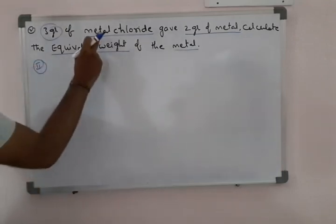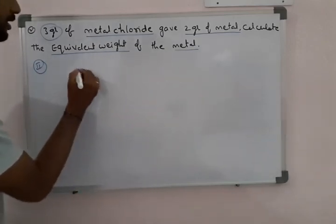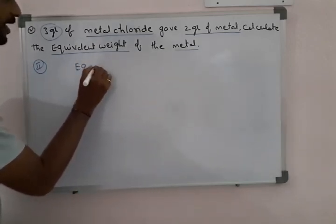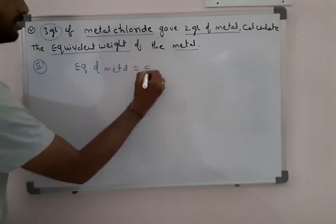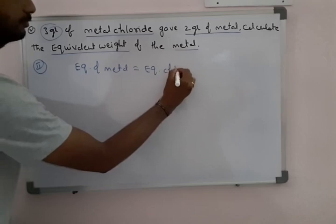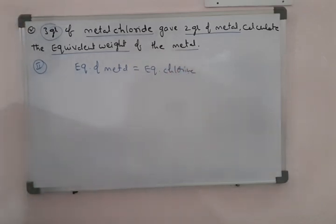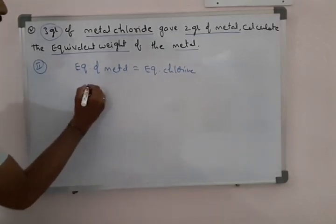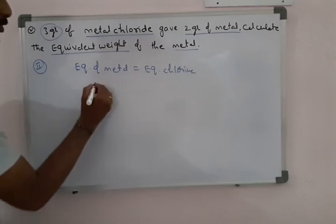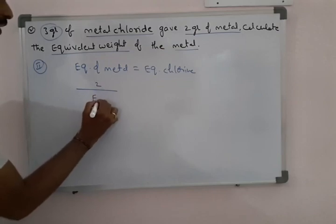In the second method, a metal forms its chloride. So equivalence of metal is equal to equivalence of chlorine. Equivalence means weight of metal divided by equivalent weight of metal. The weight of metal is 2 grams, and we need to find the equivalent weight of metal.